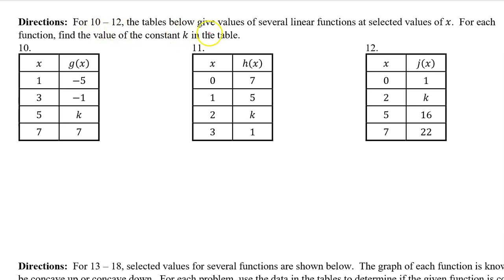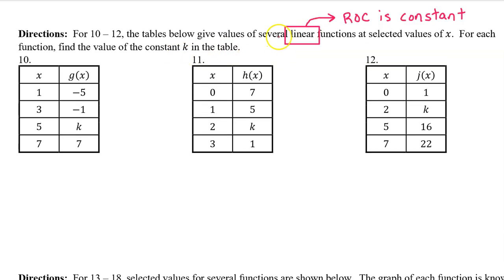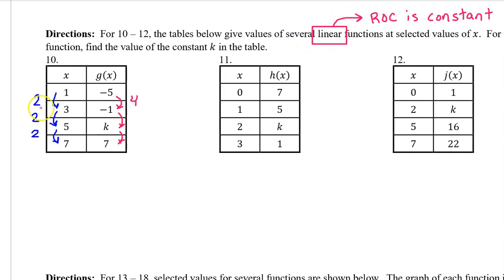For numbers 10 through 12, the tables below give values of several linear functions at selected values of x. For each function, find the value of the constant k. This will be easy because a linear function has a constant rate of change. For number 10, here are the input value changes and the one output value change we know. Because g of x is linear, the rate of change is constant, so the next change in output will also be 4. A change of 4 takes us from negative 1 to positive 3, so k equals 3.